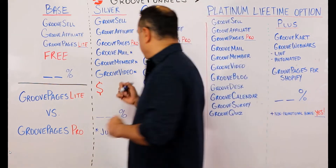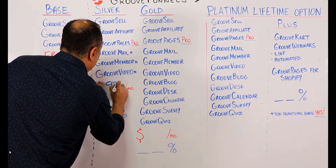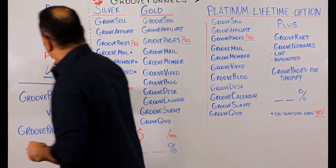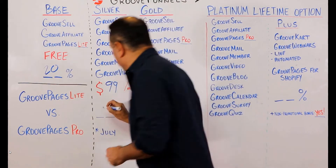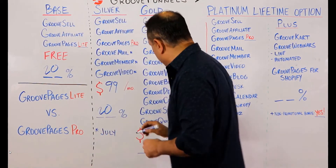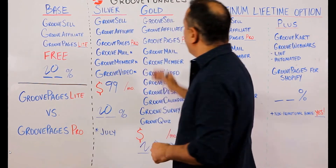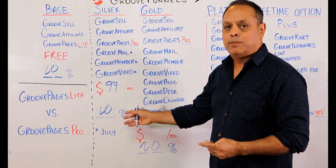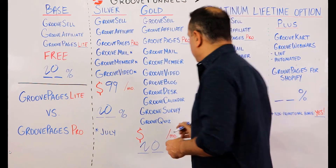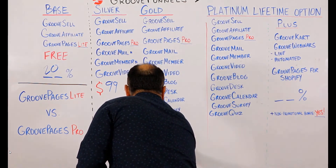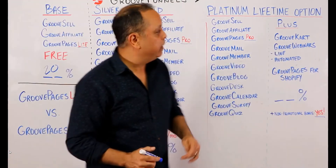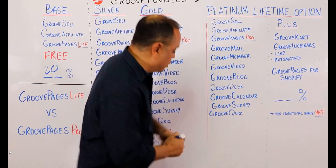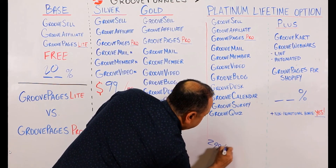The silver plan will be selling for $99 per month. Affiliate commissions are 20% on the free, silver, and gold plans. When we open to the public in July, you can also choose the gold plan at $199 per month, and of course the platinum program which will be selling for $299 per month.